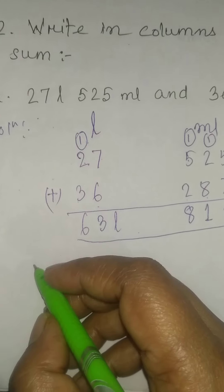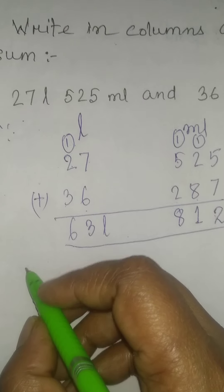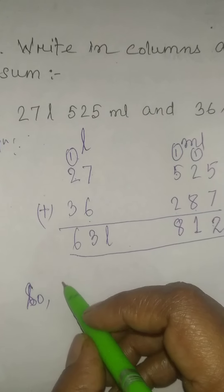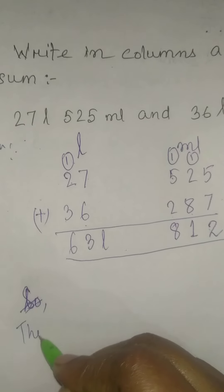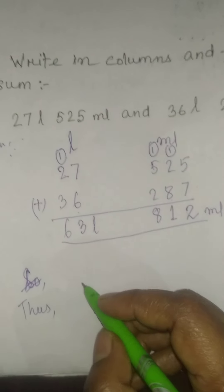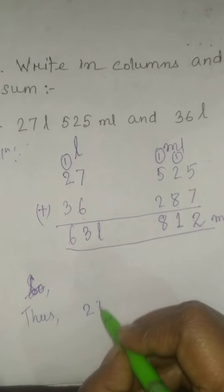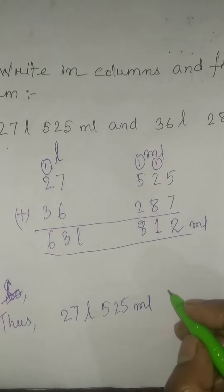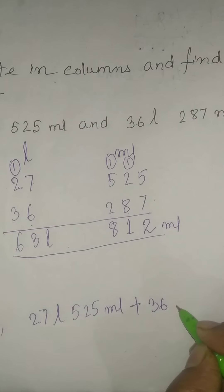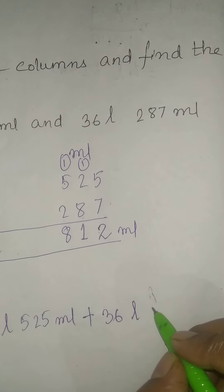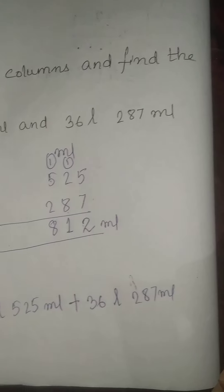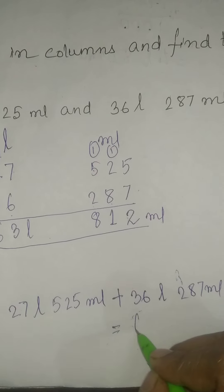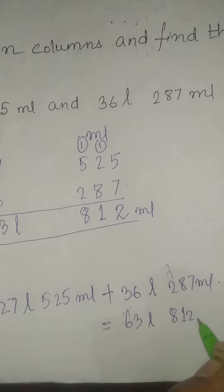So we will write: 27 litre 525 milliliter plus 36 litre 287 milliliter is equal to 63 litre, 812 milliliter.